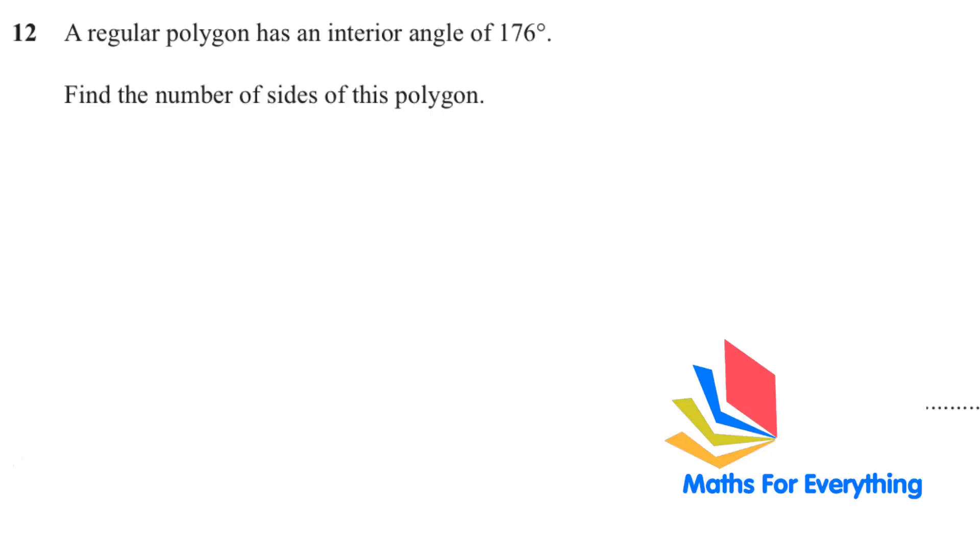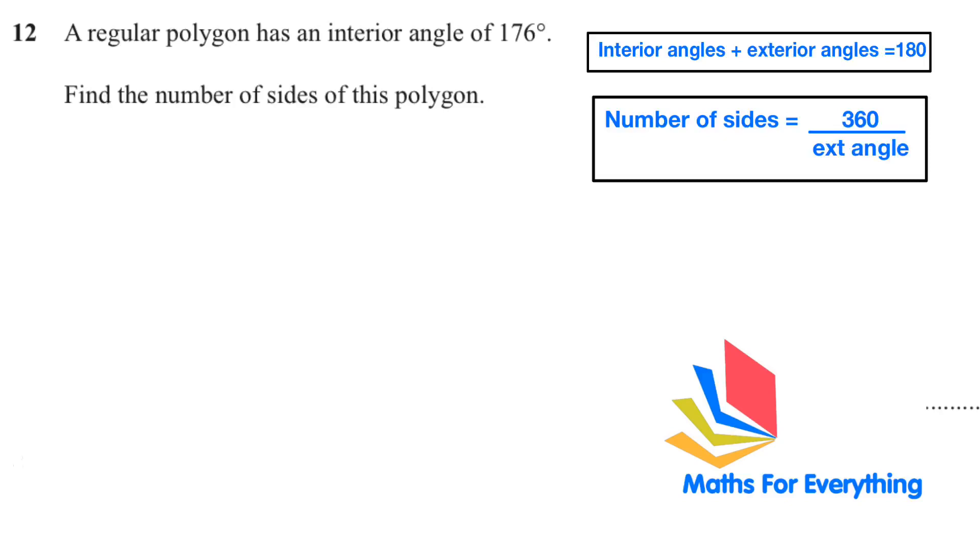Question number 12. A regular polygon has an interior angle of 176 degrees. Find the number of sides of this polygon. For this we need to know two rules. These are the two rules. Interior angle plus exterior angle equals 180. We have an interior angle, so first thing we'll do is find the exterior angle. Exterior angle will equal 180 minus 176, that is 4 degrees.